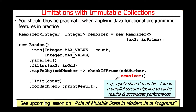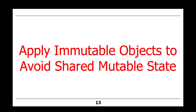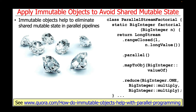In that lesson, we'll demonstrate how applying shared mutable state in a parallel stream pipeline can be used to cache results and accelerate performance. Now that we've discussed the concepts associated with immutable objects in modern Java, let's show how to apply immutable objects to avoid shared mutable state. In particular, immutable objects help to eliminate shared mutable state in parallel pipelines.